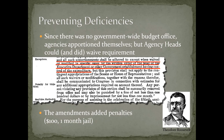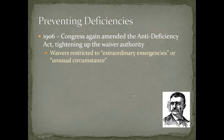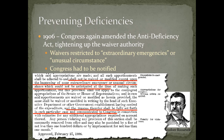The 1905 amendment also added penalties: any person violating any provision of this section shall be summarily removed from office and may also be punished by a fine of not less than $100 or by imprisonment for not less than one month. In 1906, Congress amended the Anti-Deficiency Act again, tightening up on waiver authority — waivers were restricted to extraordinary emergencies or unusual circumstances, and Congress had to be notified. Apportionment shall not be waived or modified except upon the happening of some extraordinary emergency or unusual circumstance which could not be anticipated, and the reasons had to be communicated to Congress.